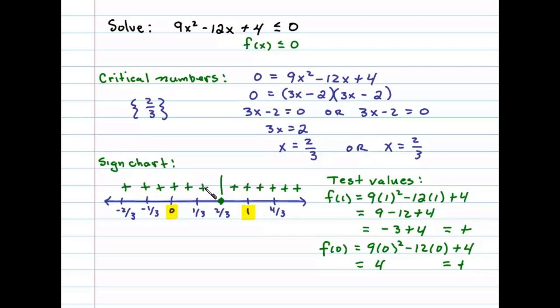Now we'll use the sign chart to answer the question. The question asks for what values, for what x values, is this quadratic less than or equal to 0? In other words, when is it negative or 0?